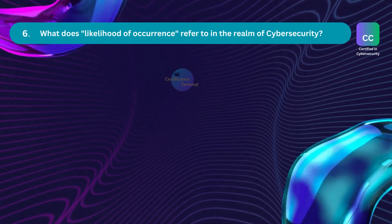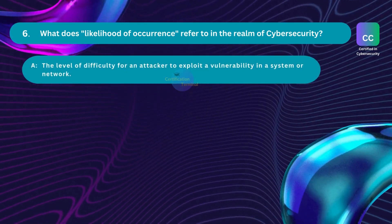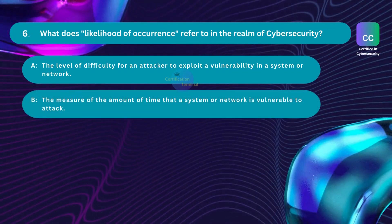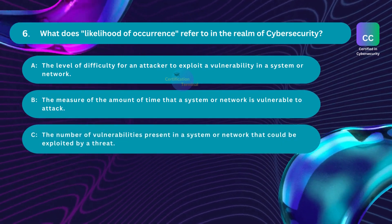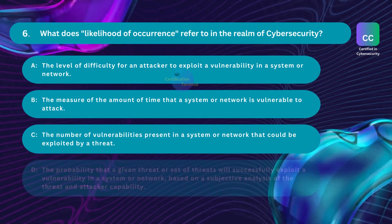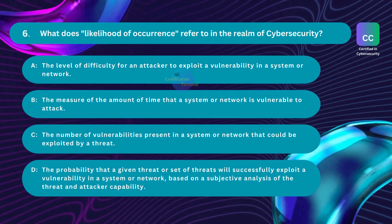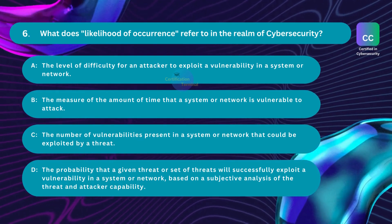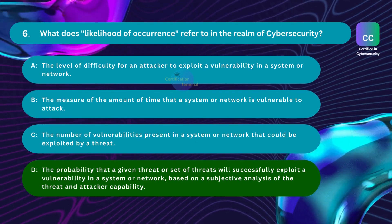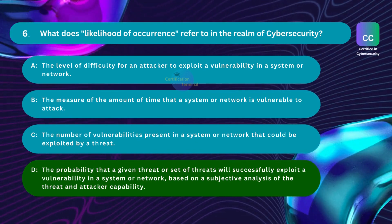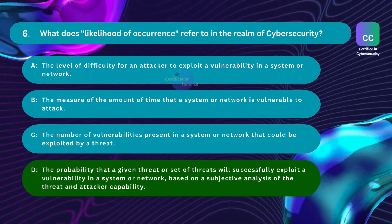Question number 6. What does likelihood of occurrence refer to in the realm of cybersecurity? Option A: the level of difficulty for an attacker to exploit a vulnerability. Option B: the amount of time a system is vulnerable to attack. Option C: the number of vulnerabilities present in a system that could be exploited. Option D: the probability that a given threat will successfully exploit a vulnerability, based on a subjective analysis of the threat and attacker capability. The correct answer is Option D. Likelihood of occurrence helps calculate the severity of a vulnerability — it is the probability of the threat occurring.